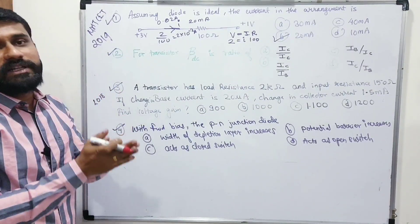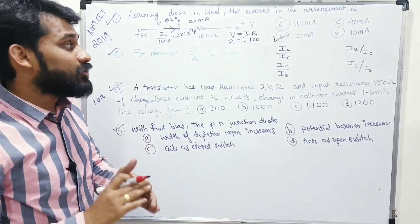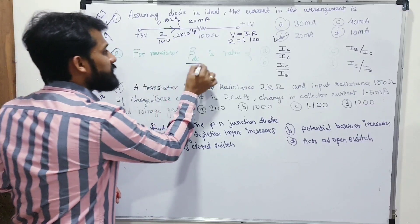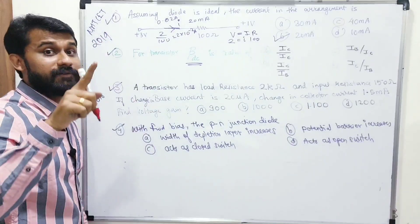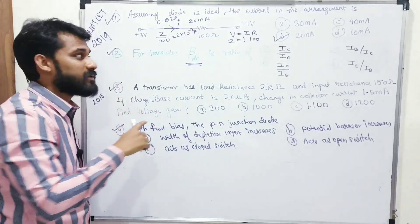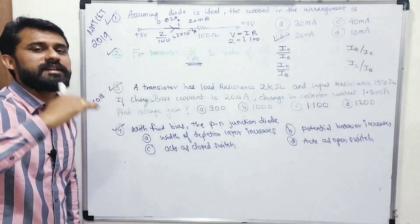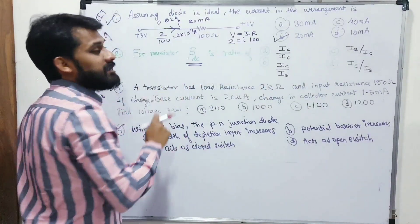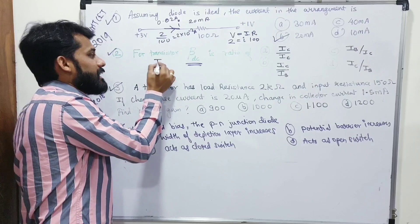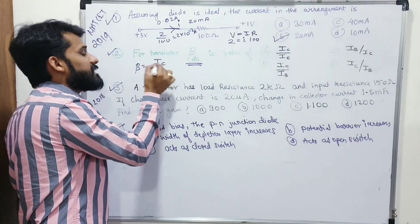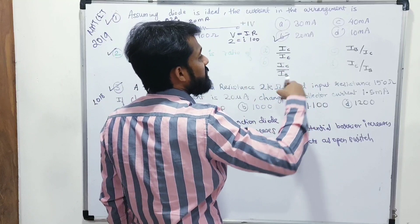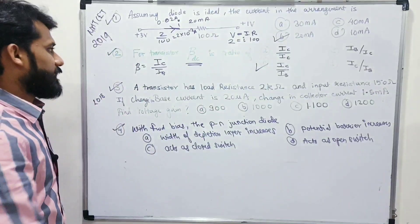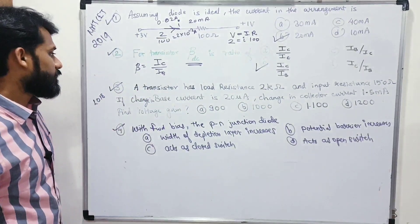Second question from 2019 CET: what is beta DC? We know beta is the current ratio IC/IB. Transistors work on DC (direct current), hence the term beta DC. The correct formula is beta DC = IC/IB, i.e., collector current divided by base current. Option B is correct. This is a very straightforward formula-based question.